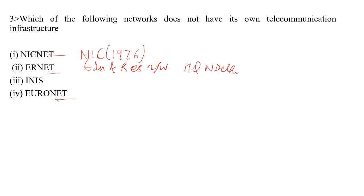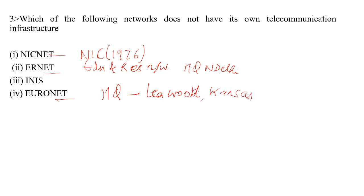Another option is EURONET — EURONET is an American-headquartered worldwide provider of electronic payment services, with headquarters in Leawood, Kansas. So the only option remaining is INIS, because the question asks which network does not have its own telecommunication infrastructure.